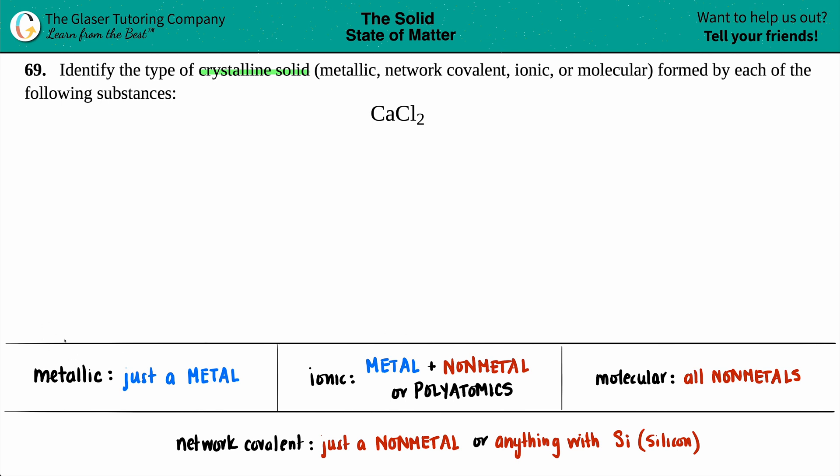If your substance in question is a metallic crystalline substance, just know that the word metal is in the word metallic. So in order to be a metallic crystalline solid, you just have to see a single metal—no non-metals allowed.